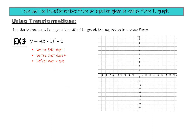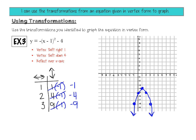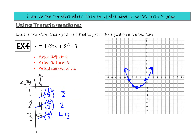Pause and try examples 3 and 4 on your own. For example 3, the vertex is at right 1, down 4, and the reflection over the x-axis makes it open down: instead of over 1 up 1, it goes over 1 down 1; over 2 down 4; over 3 down 9. For example 4, the vertex shifted left 2 and down 3, with a compression of 1/2: over 1 up 1/2; over 2 up 2 (half of 4); over 3 up 4.5 (half of 9).